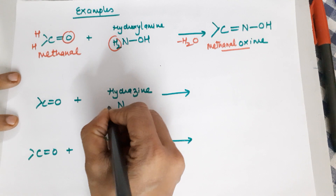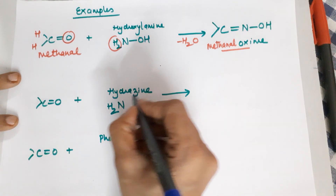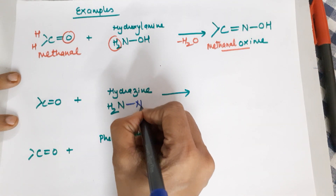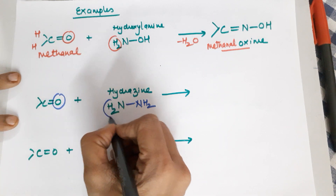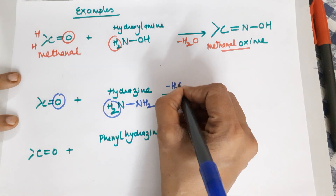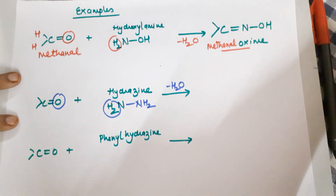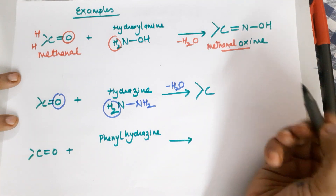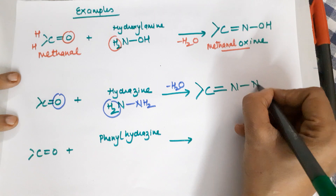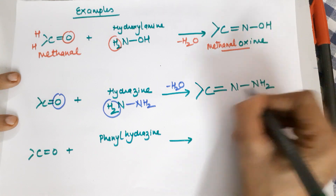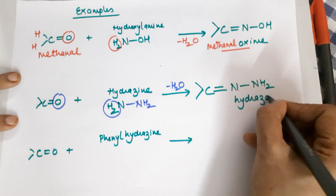The next reaction uses hydrazine. Hydrazine is NH2-NH2. The reaction again involves loss of water, and the product formed is whatever you started with bearing a C=N-NH2 group. The name of the product is a hydrazone — the prefix depends on what you started with.